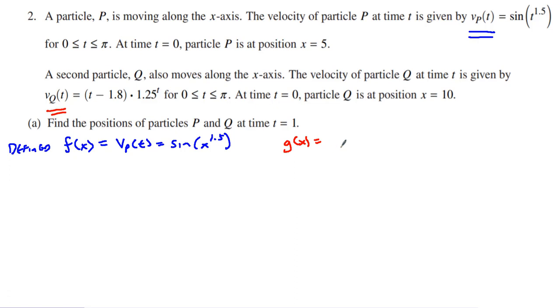I don't have any problems, but the g of x is equal to the V of particle Q with respect to time, and that is x minus 1.8 times 1.25 to the x power. And again, that's going from zero to pi. But at time equals zero, particle Q is at a different position, and I want to find the positions at time equals one.